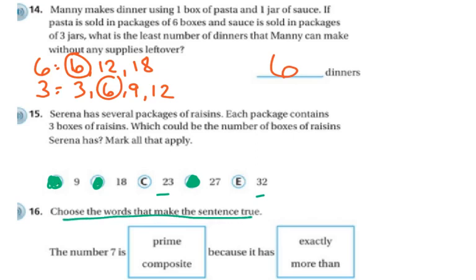Next, it says choose the words that make sense in the number sentence. The number 7 is prime because it has exactly two factors, 1 and 7.